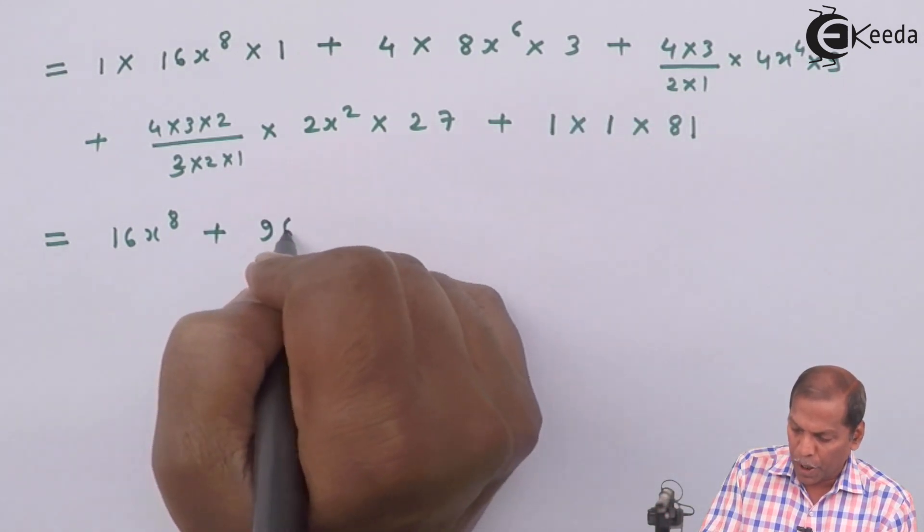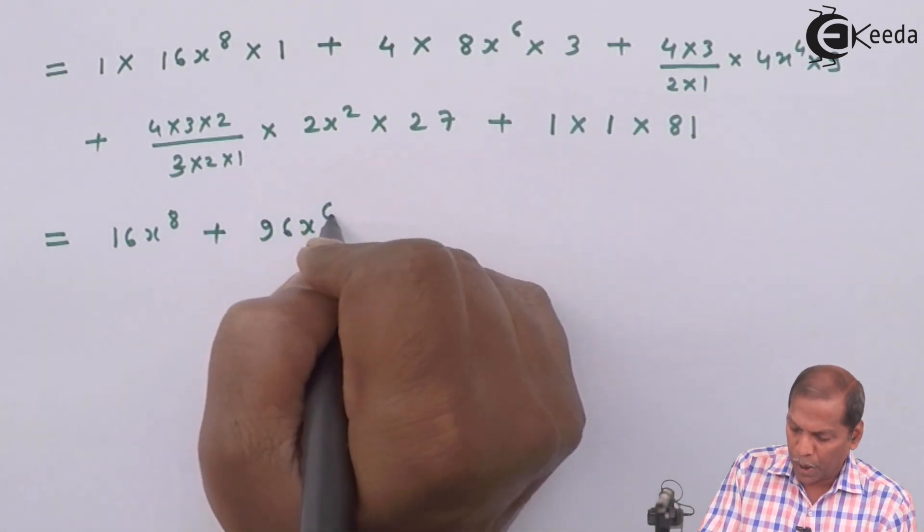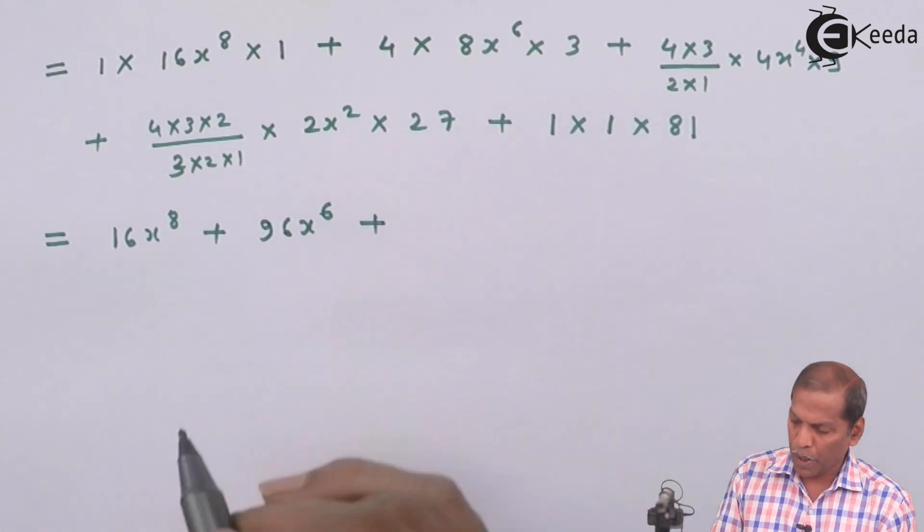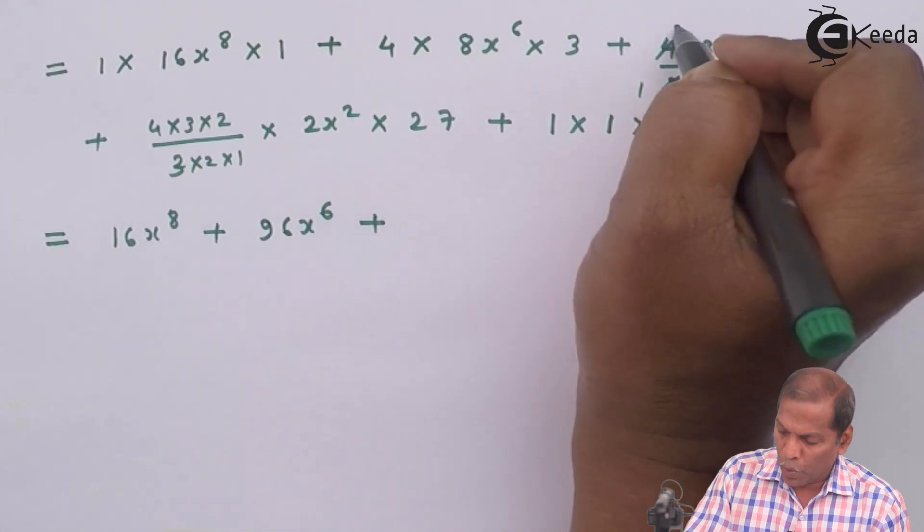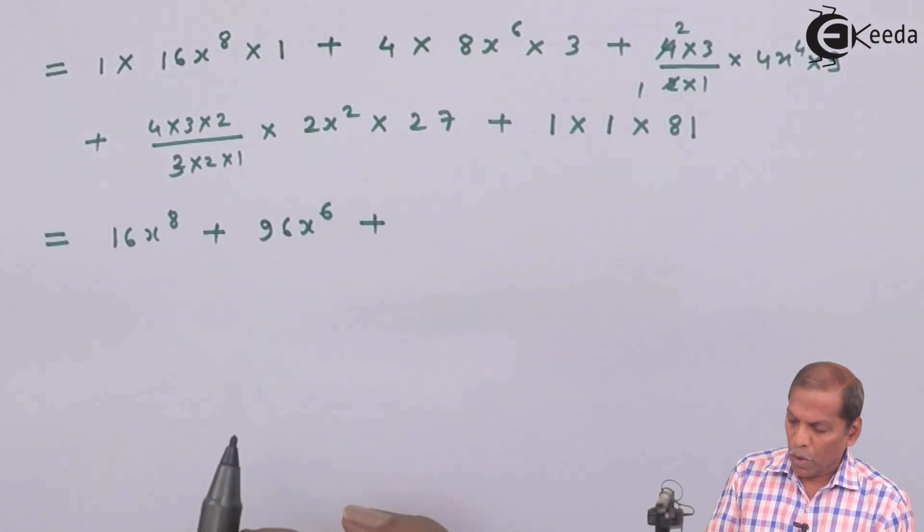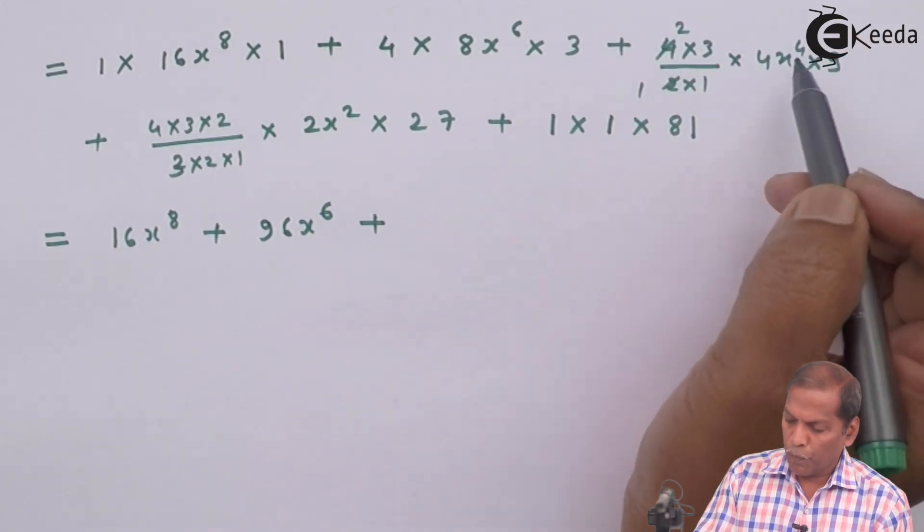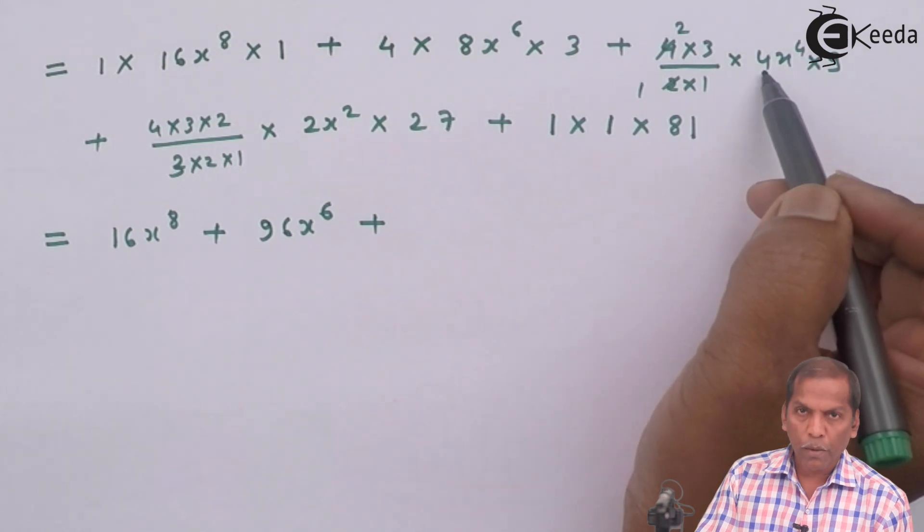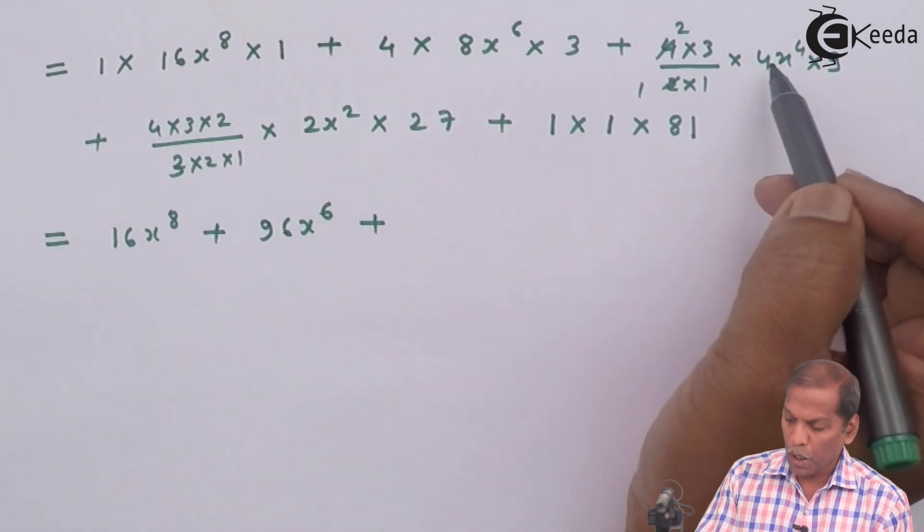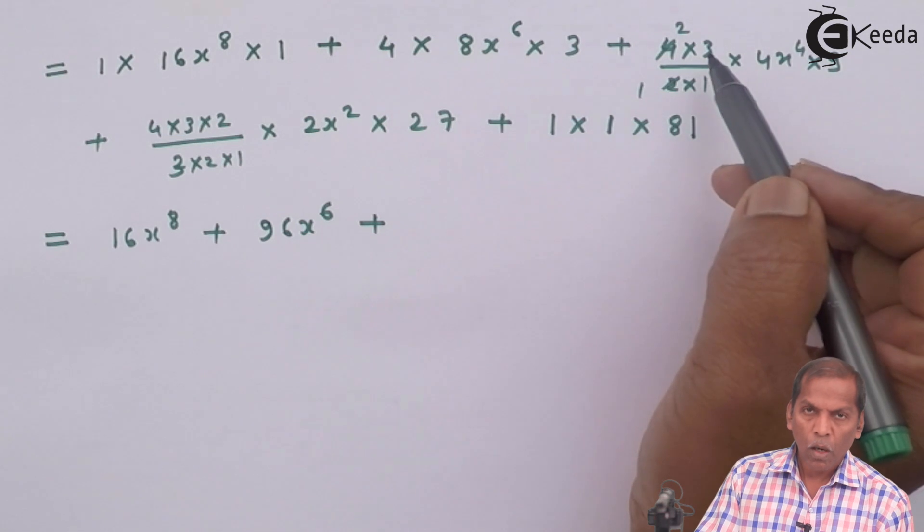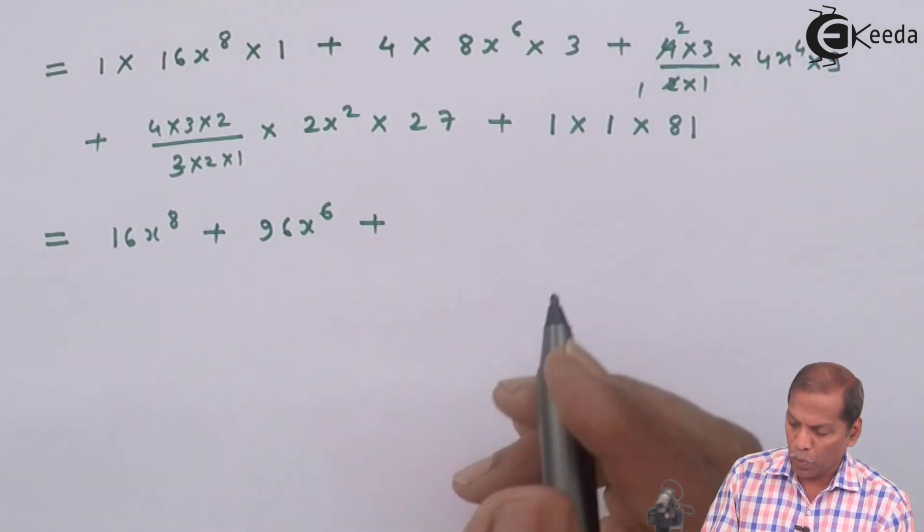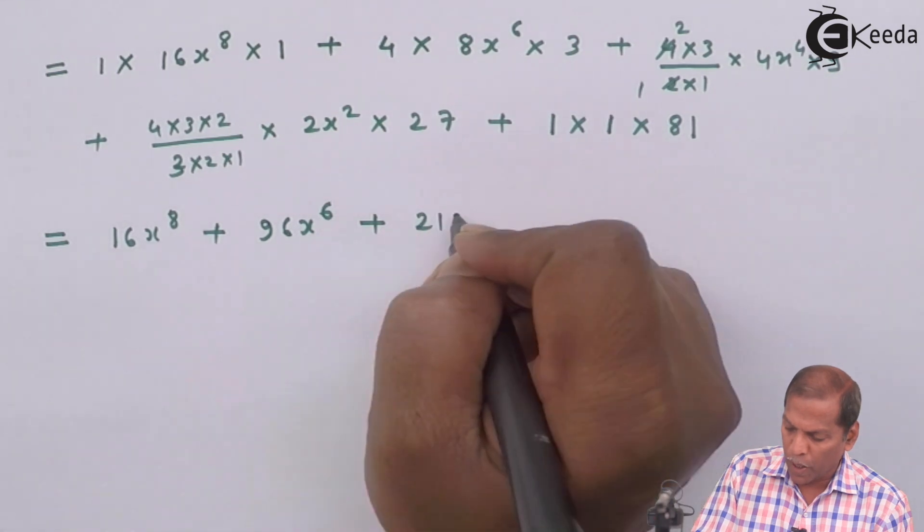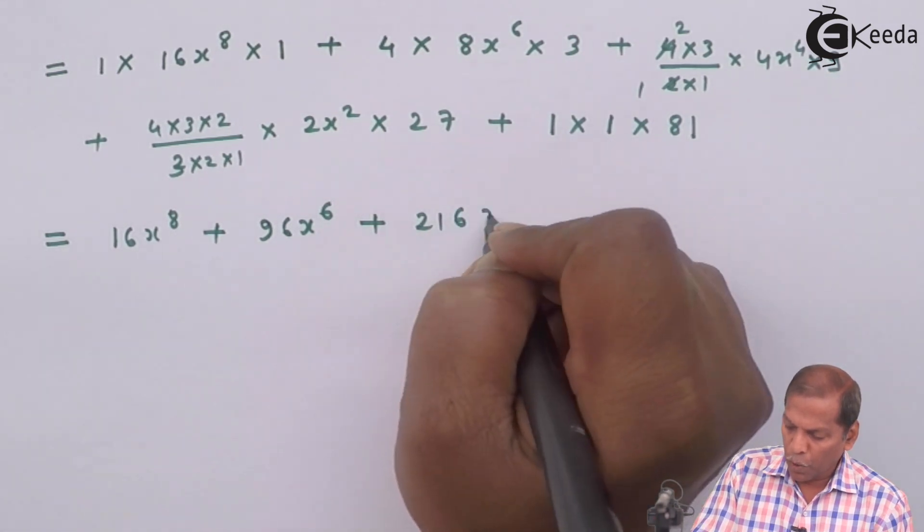96x⁶ plus now 9 times 4 that is 36 times 6, that is 216x⁴ plus